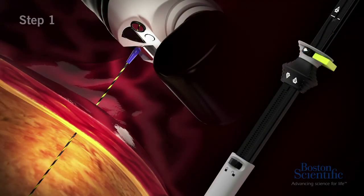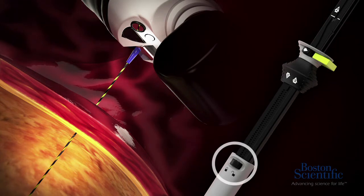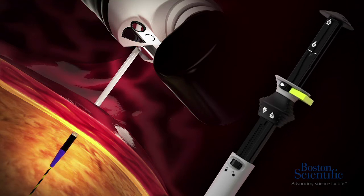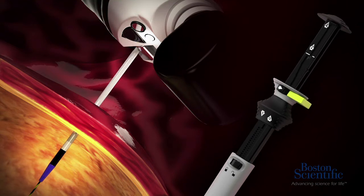Step number one. Under EUS guidance, advance the catheter into the cyst by unlocking the catheter lock and moving the catheter control hub downward until the distal catheter is in the desired location within the cyst. Lock the catheter lock.